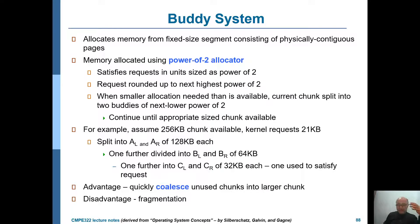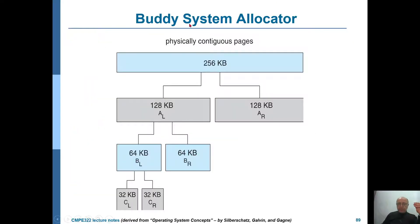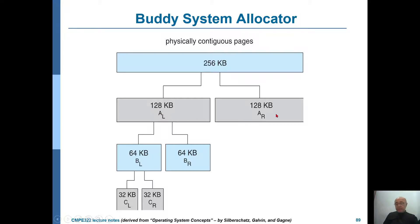It's easier to explain with a figure. You have these physically contiguous pages — let's say 256 kilobytes. Now, if you need something like 30 kilobytes, you don't want to consume 30 kilobytes and waste the rest. Instead, in the buddy system, you split this into two equal parts of 128 kilobytes each. Let's call these A-left and A-right. Then take one of them — in this example we go with the left. A-left is split again into two parts of 64 kilobytes each, called B-left and B-right.